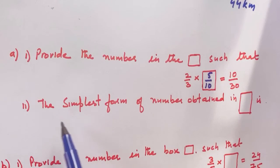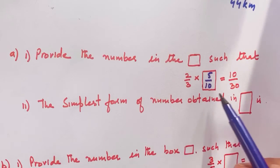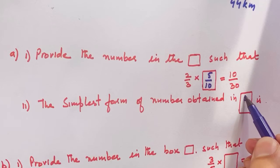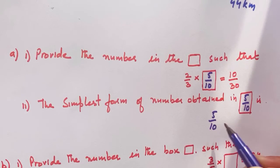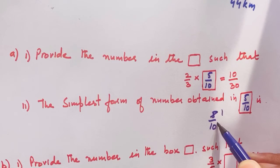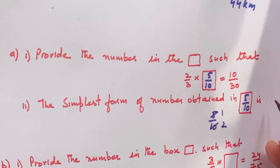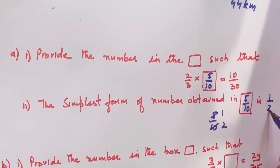Next is the simplest form of the number 5 upon 10. What is the simplest form? 5 upon 10, divide by 5. What is the simplest form? 1 upon 2.